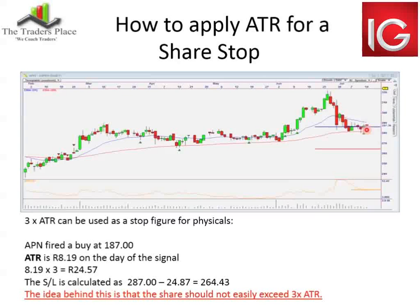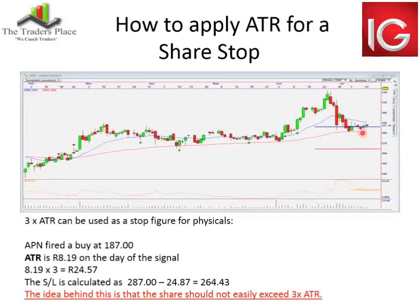The thinking says that if a share's average range is 8 rand, it's unlikely to go three times that within the next day or five. If you have software with an average true range indicator, it's much easier — you take the value of that indicator when your signal fires, multiply it by three, subtract that from your buying price. You can use your entry price, which is best, to determine where the stop should be.